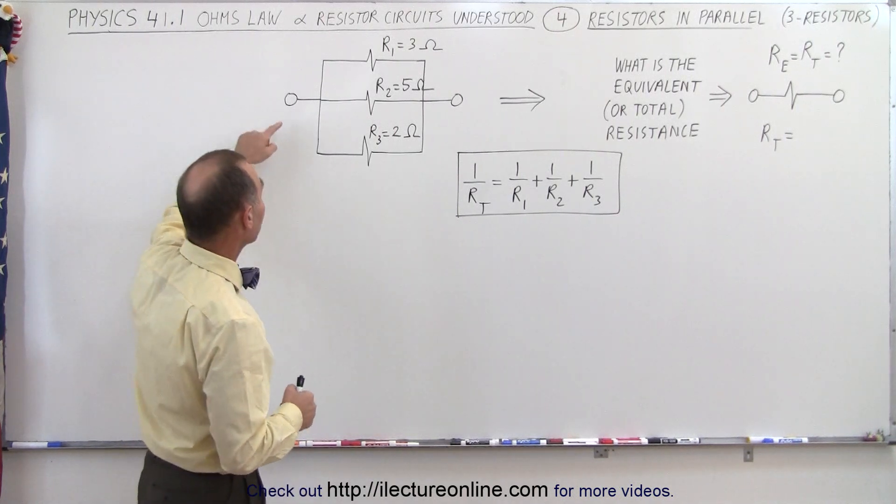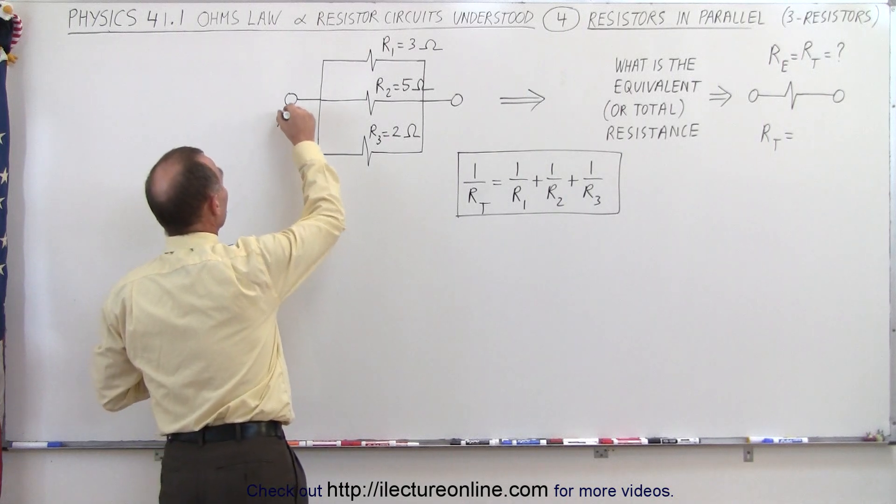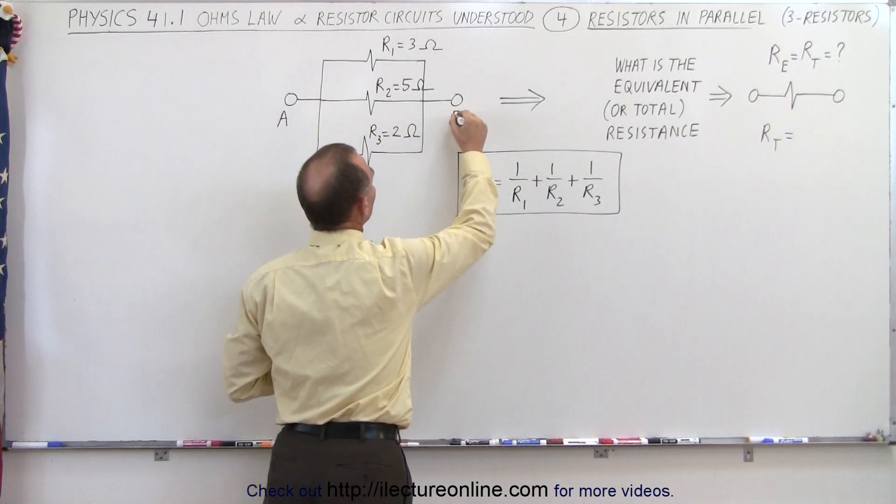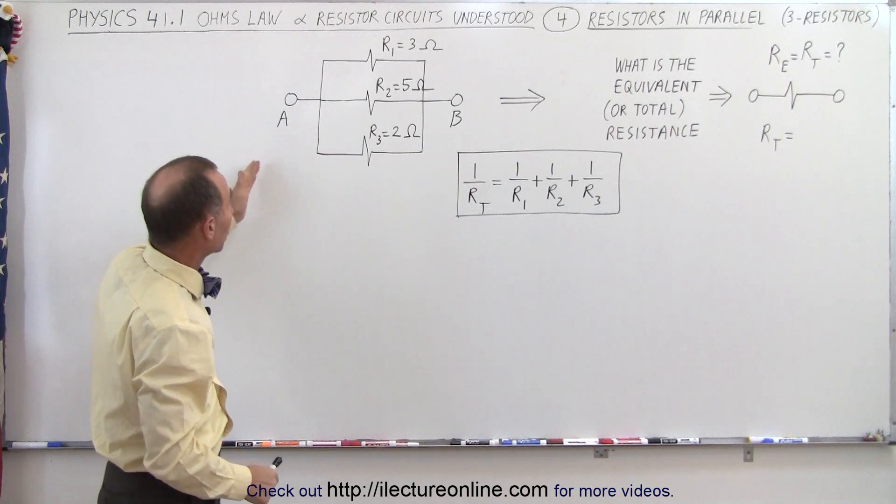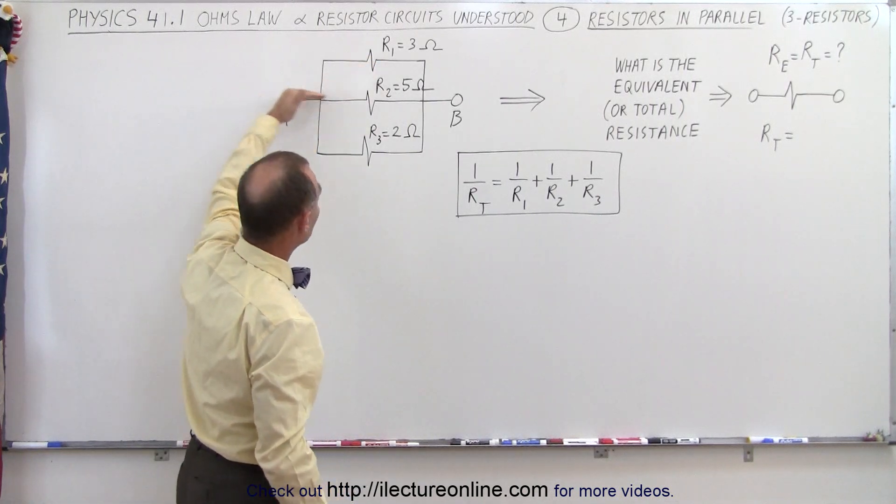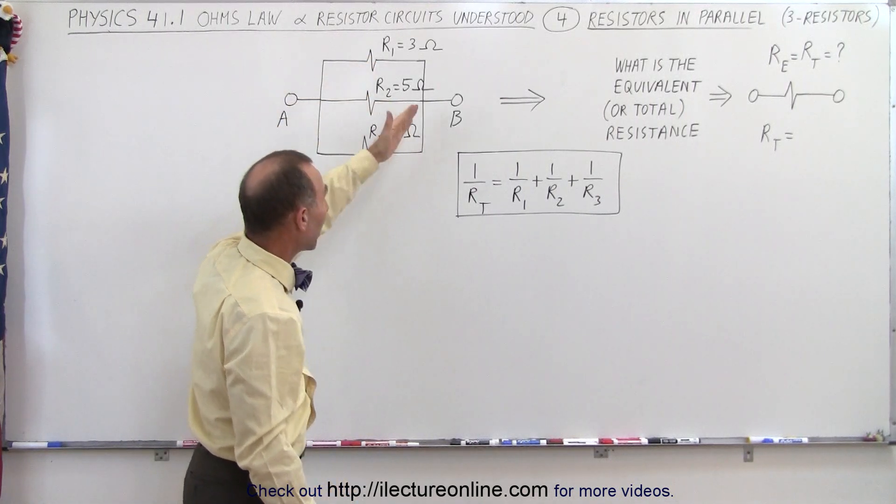What that means is that the current, going for example from point A to point B in a circuit, now has three different paths that it can follow. The current can go to the top resistor, it can go to the middle resistor, or it can go down to the bottom resistor.